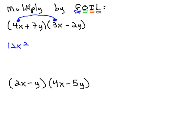O stands for the outside, meaning the outside two extremes, 4x times negative 2y, which would be negative 8xy.